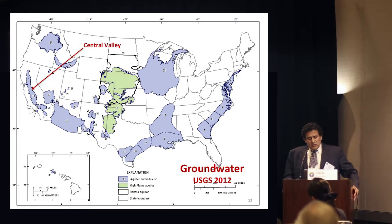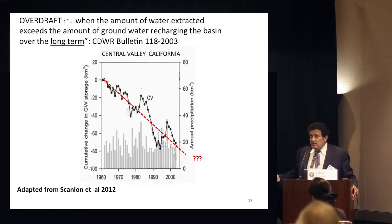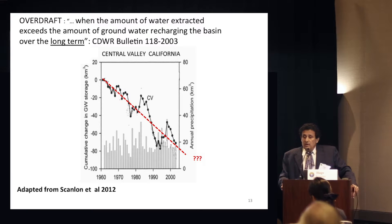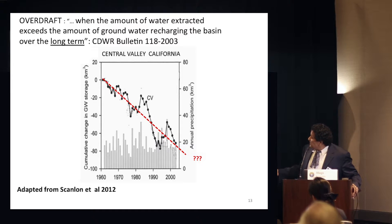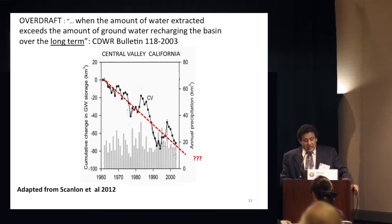Looking at regional aquifers in the United States, let's take a look at the Central Valley. I found this a very interesting graph by Scanlon, showing the overall change in groundwater storage in the Central Valley going back to 1960. Notice that it is definitely an overdraft — the amount of groundwater extraction that exceeds the long-term recharge. This is an example where groundwater extraction exceeds the safe yield of the aquifer. The question is: will the SGMA — the California Sustainability Groundwater Management Act — reverse that trend, or will it project to a complete drying of the aquifer?